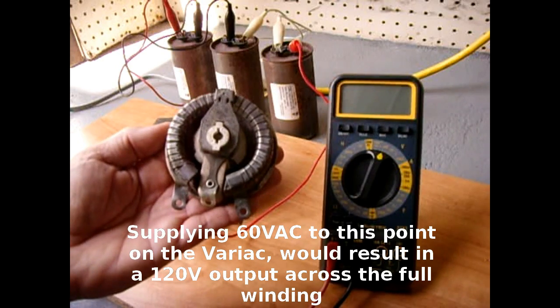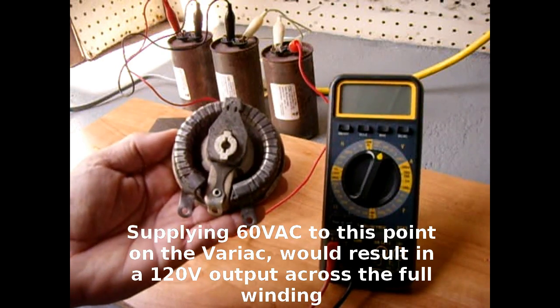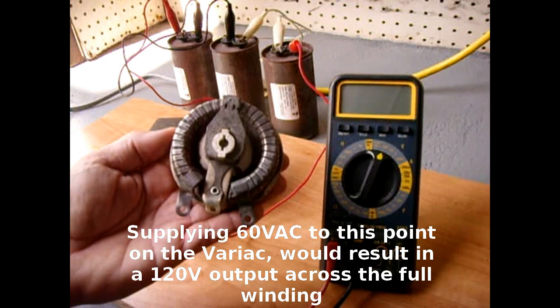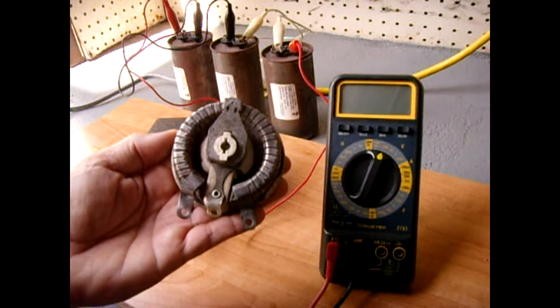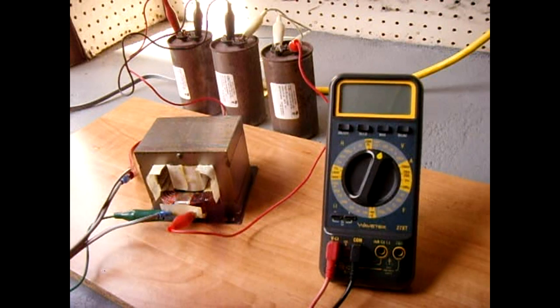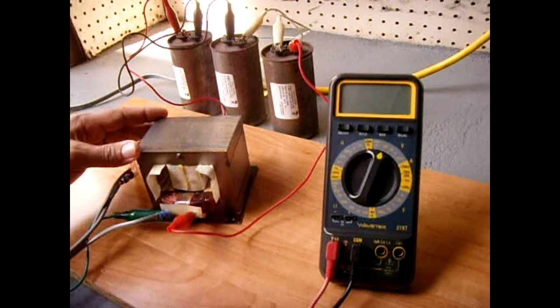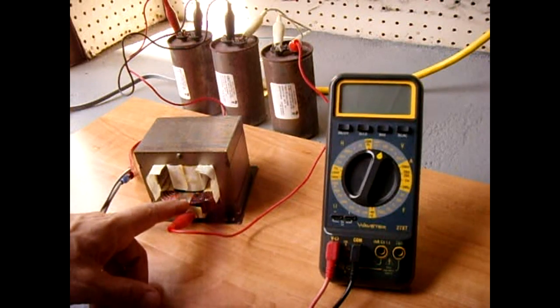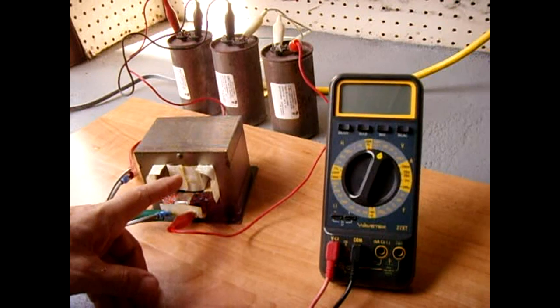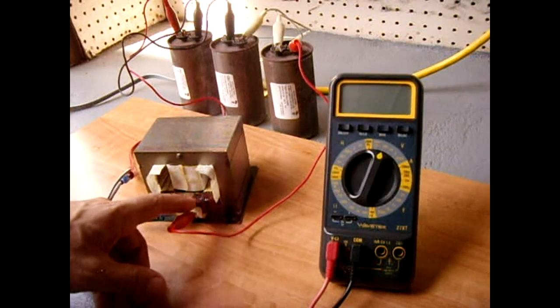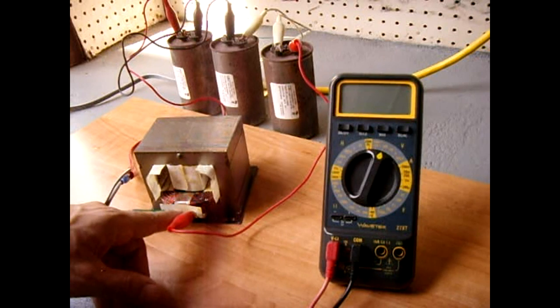Now they make variacs step up and step down, but the most common ones are used for stepping down. Now the only issue you have when using an auto transformer or a variac is that you do not have any isolation between your primary winding and secondary winding. All the power is being tapped off of the single winding you see here.